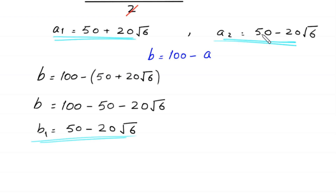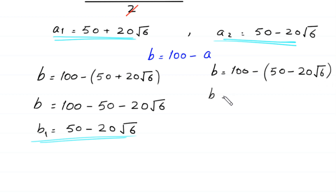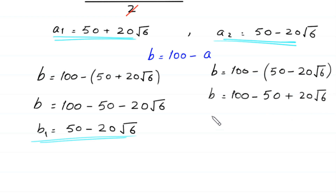Now we put the value of A2, which is 50 minus 20 times square root of 6. So B equals 100 minus (50 minus 20 times square root of 6). The minus changes the signs: this positive 50 becomes negative 50, and the negative 20 times square root of 6 becomes positive. So B2 equals 100 minus 50 plus 20 times square root of 6, giving B2 equals 50 plus 20 times square root of 6.